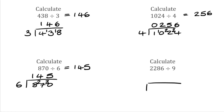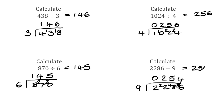For this question we have 2286 divided by 9. How many 9s fit into 2? That's 0, so we carry the 2 over. 9s into 22 — that would be 2, because 9 times 2 is 18, leaving a remainder of 4. We then do 9s into 48 — that would be 5, because 9 times 5 is 45, leaving a remainder of 3. And finally, 9s into 36 would be 4. So our answer is 254.